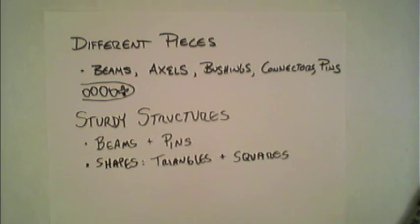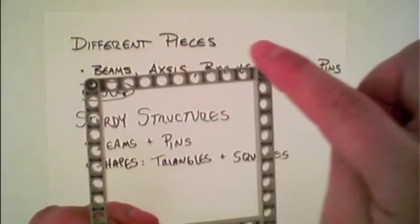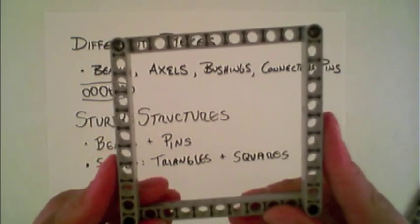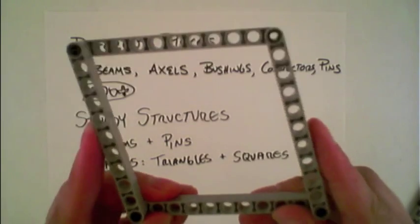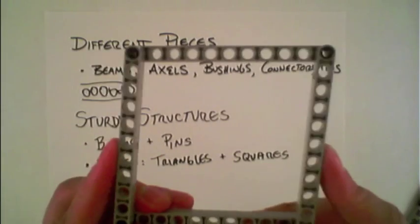In comparison to that, building squares—here's a square that's built out of four beams using the black connector pins at the corners—is actually not structurally sound, and can very easily be deformed by tilting one side to the other.